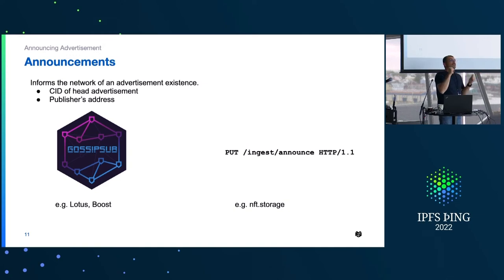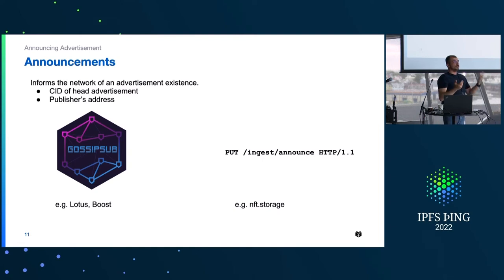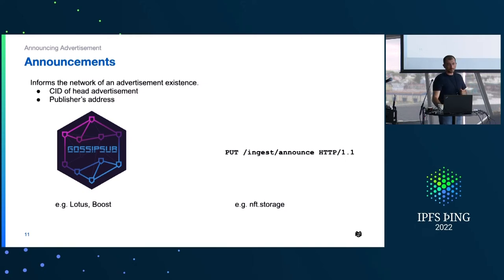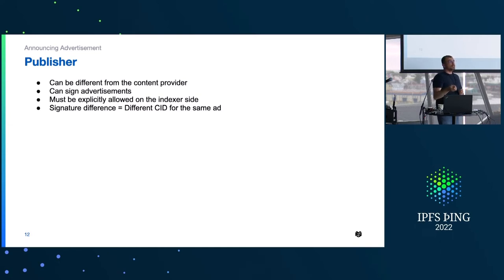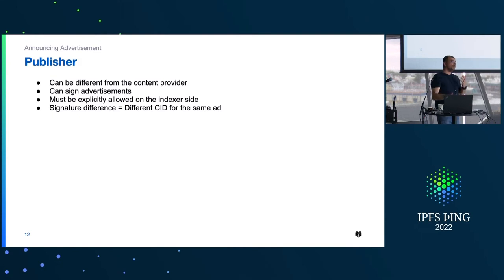Announcements can be made through two different channels. You can use gossip sub to publish this information, or you can make an explicit HTTP PUT request to the index provider via an announce URL. For example, Lotus and Boost use the gossip sub network to disseminate announcements, whereas something like nft.storage makes explicit PUT requests to the current indexer to notify it of new advertisements. There's also a concept of a publisher that can be different from the content or index provider.